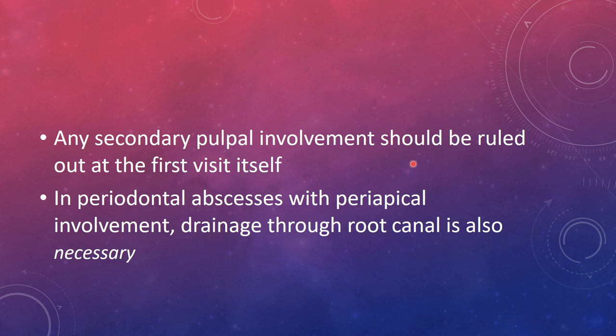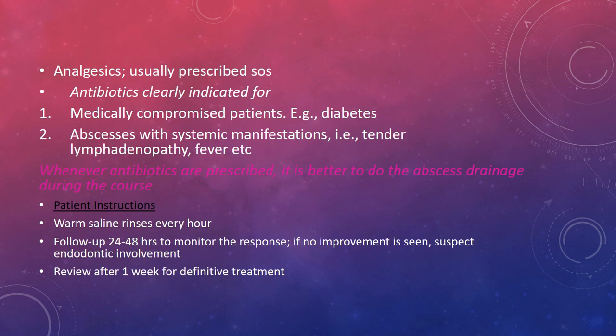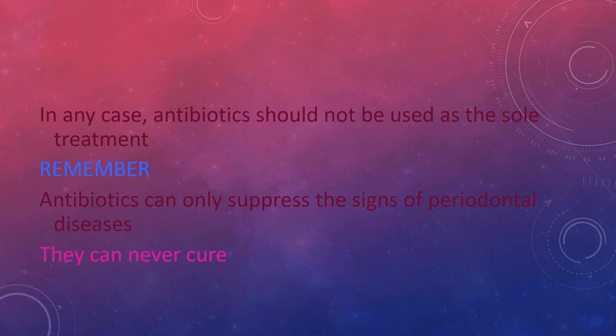Any secondary pulpal involvement should be ruled out at the first visit. In periodontal abscesses with periapical involvement, drainage through the root canal may also be done. Regarding medications, antibiotics are clearly indicated for medically compromised patients (e.g., diabetes) and abscesses with systemic manifestations such as tender lymph nodes or fever. Abscess drainage should be done during the antibiotic course. Patient instructions include warm saline rinses; a follow-up at 24–48 hours is recommended to monitor response. Antibiotics should not be used as sole treatment — they can only suppress signs of periodontal disease, never cure it.